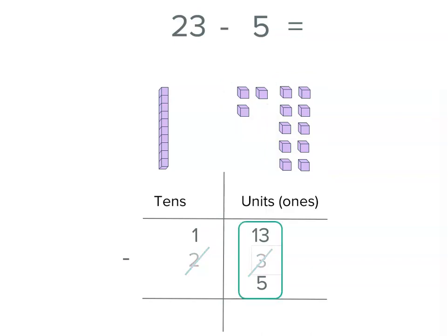Remember, we start from our units place, 13 minus 5. Well, 1, 2, 3, 4, 5. If we take 5 away, we've got 8 units left. So that means 8 goes in that place right there.